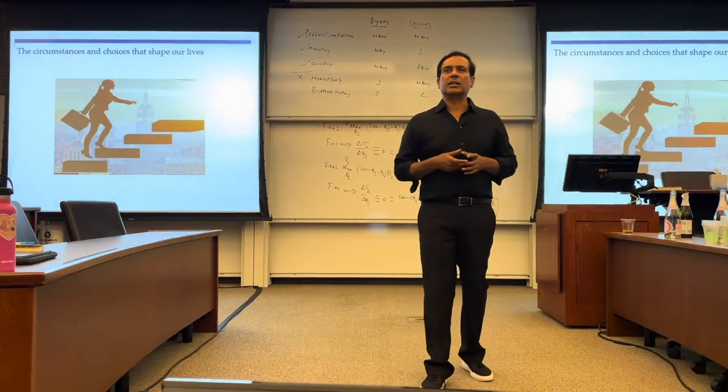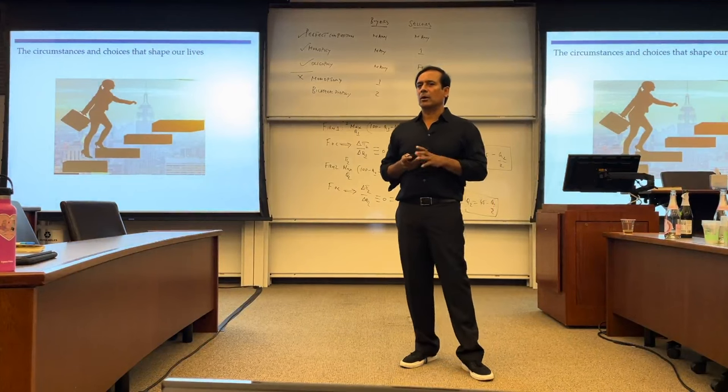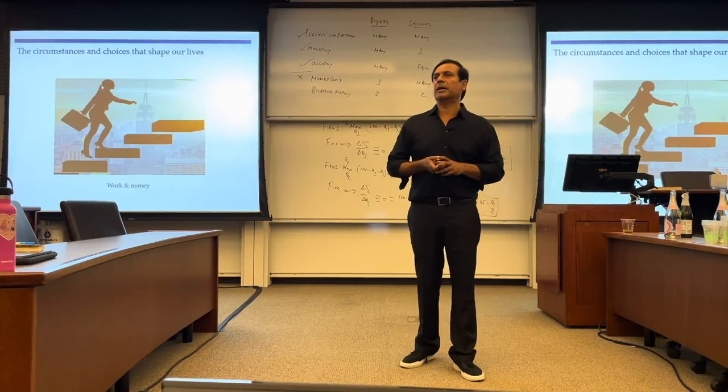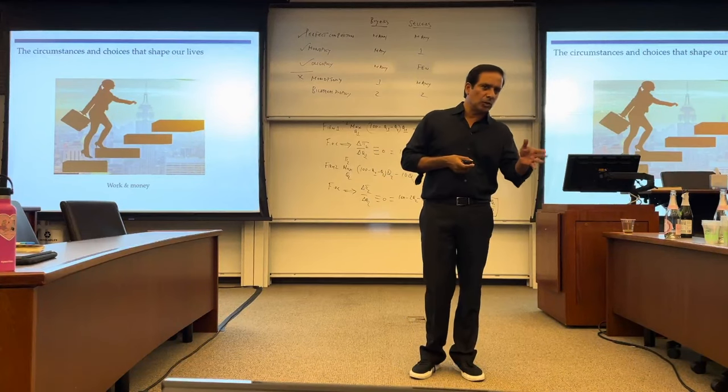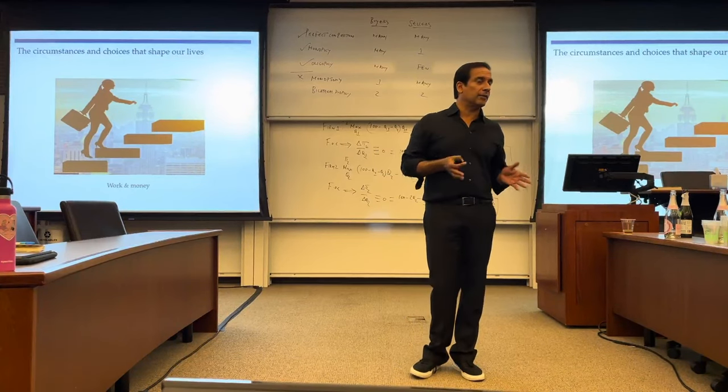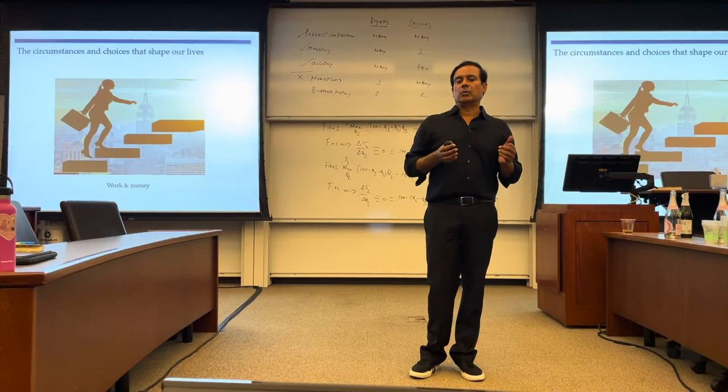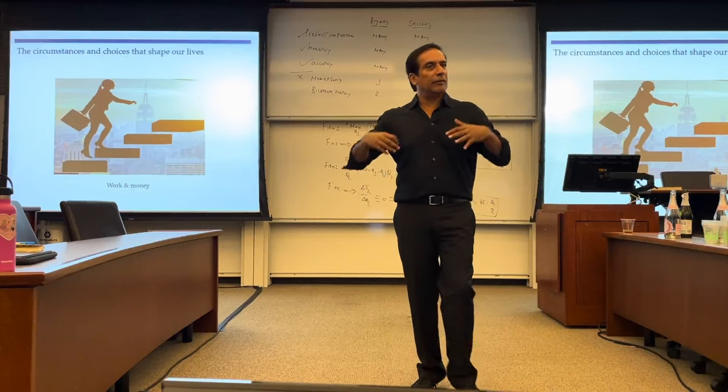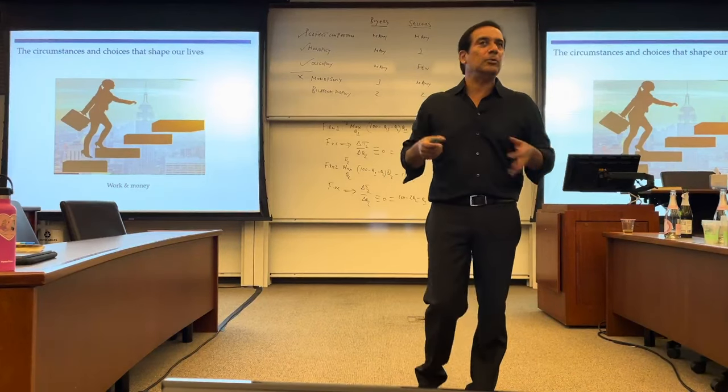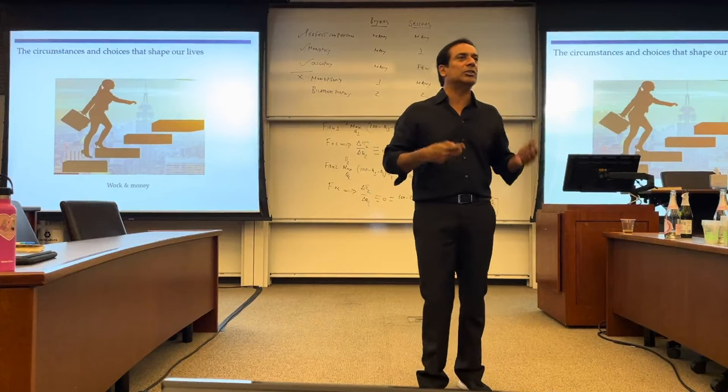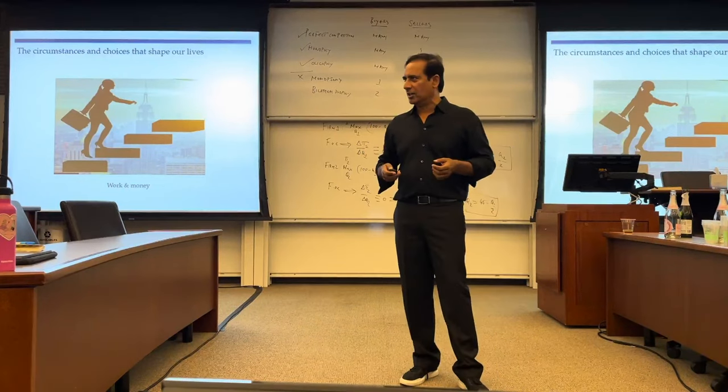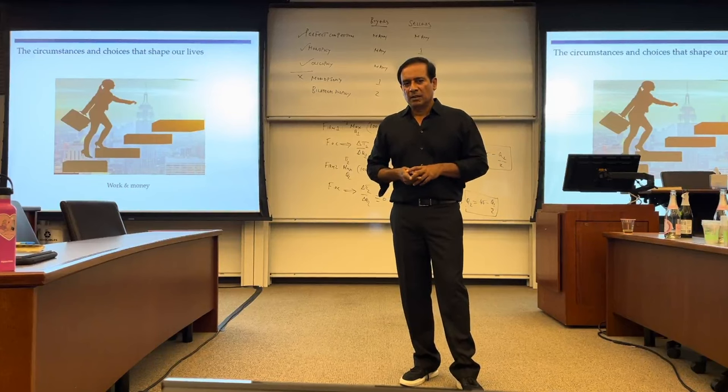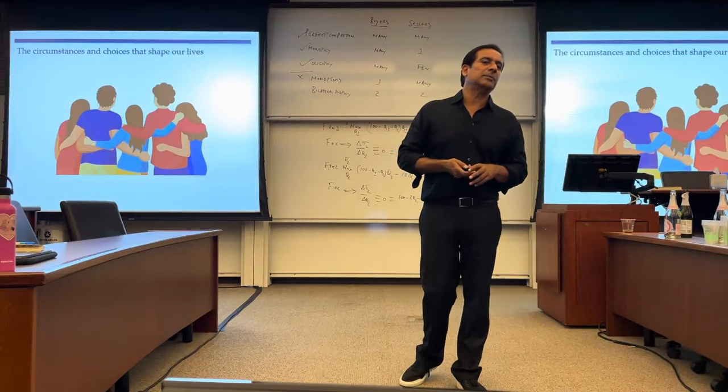What are the circumstances and choices that shape our lives? I want to talk about four. The first in our modern world is work and money. Education, work, and money. It rules our lives. Indeed, work and money soon becomes the very reason we exist. Everything we do is about work and money. We are constantly trying to sell ourselves.